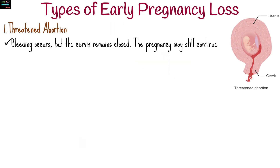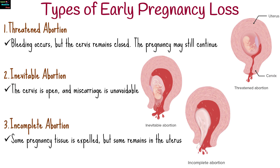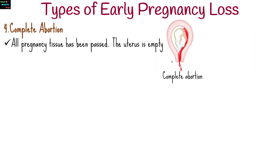Early pregnancy loss can be classified into several types. Threatened abortion is where bleeding occurs but the cervix remains closed and the pregnancy may still continue. Inevitable abortion is where the cervix is open and miscarriage is unavoidable. Incomplete abortion is where some pregnancy tissue is expelled but some remains in the uterus. Complete abortion is where all pregnancy tissue has been passed and the uterus is empty.